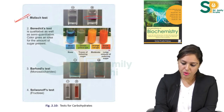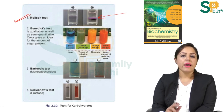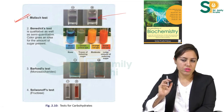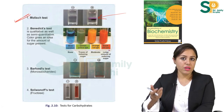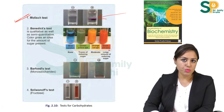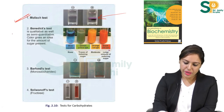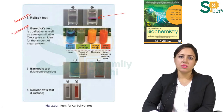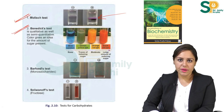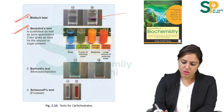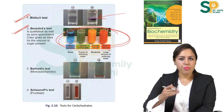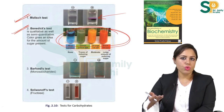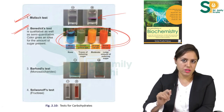Molisch test gives a purple colored ring at the junction of two liquids. This positive purple colored ring means carbohydrate is present. Benedict's test is considered a semi-quantitative test because various colors are obtained depending upon the amount of sugar present in the sample.